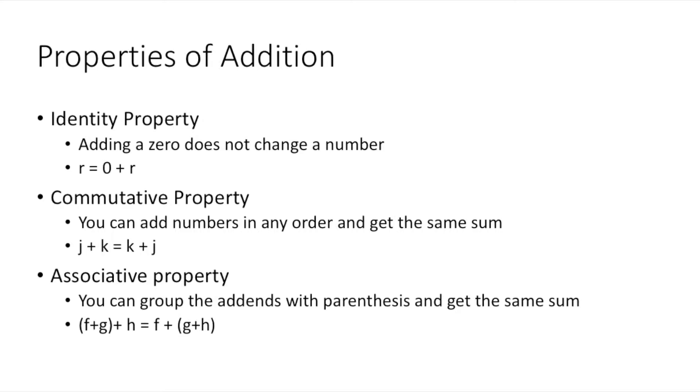For commutative property, you can add numbers in any order and get the same result. For example, let's do two plus one. Two plus one is equal to one plus two. They would both give you three.